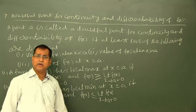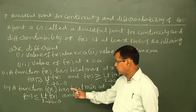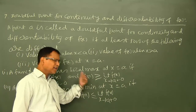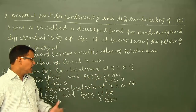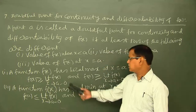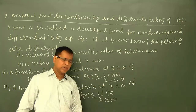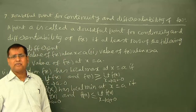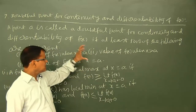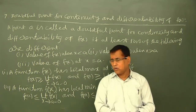ठीक वैसे ही f(x) का A पर local minimum होगा जब A पर function का value, f(x) का left hand limit extending to A और f(x) का right hand limit extending to A — दोनों से less than or equal to हो। इस case में हम left hand limit और right hand limit से compare करते हैं: अगर f(A) दोनों limits से less than or equal to है तो A पर function का local minimum होगा। यह concept बहुत important है क्योंकि अगर कोई function किसी point पर continuous है या नहीं — यह doubtful है — differentiable है या नहीं, और वहाँ पर local maximum minimum हो तो उसके लिए condition क्या होगा।